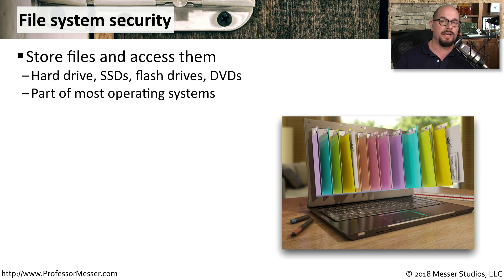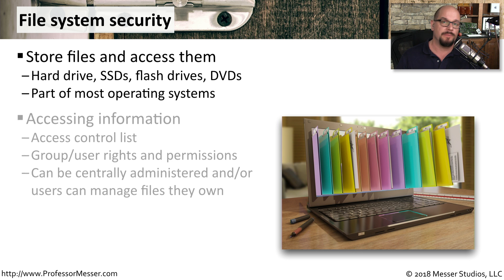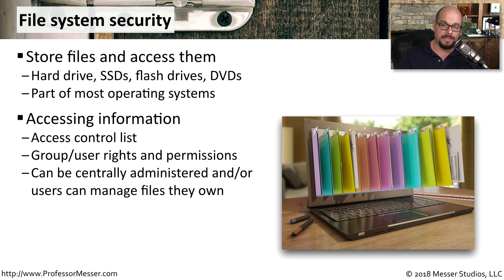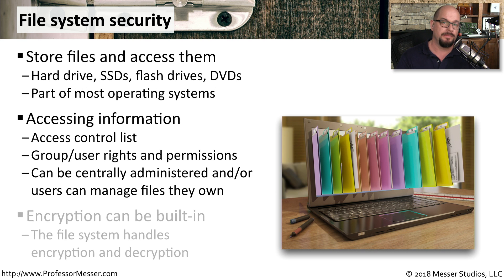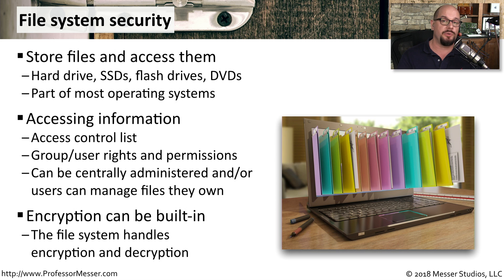Most operating systems provide a level of security at the file system. As you store files on a hard drive, an SSD, a flash drive, or other types of media, the operating system itself can assign security to each one of those individual files. Most operating systems will keep an access control list — a list of groups or users assigned rights and permissions to particular files — and all of this can be centrally administered or managed by the individual file owner. Many file systems can also include the ability to encrypt and decrypt the data, adding an additional layer of security.